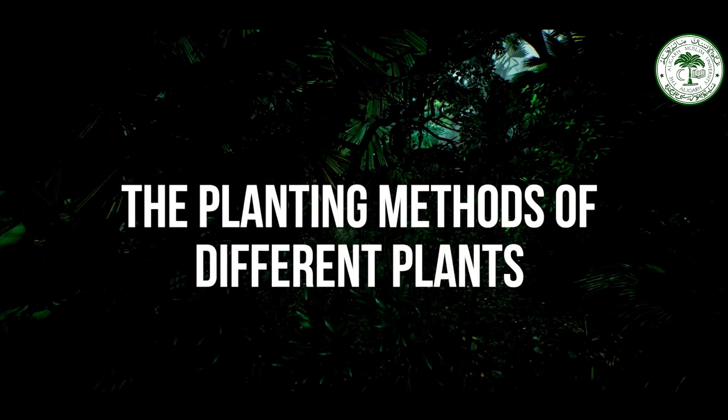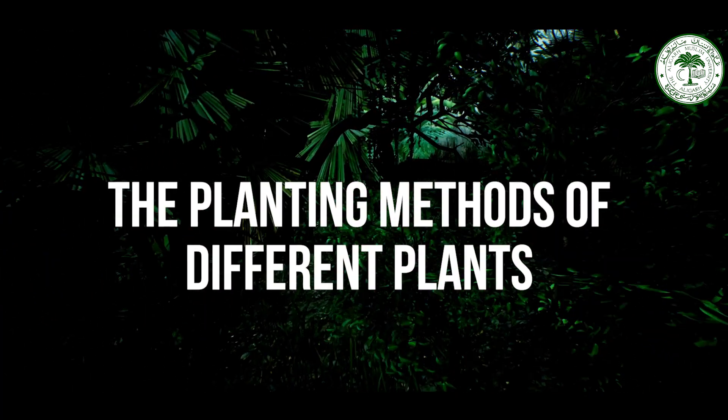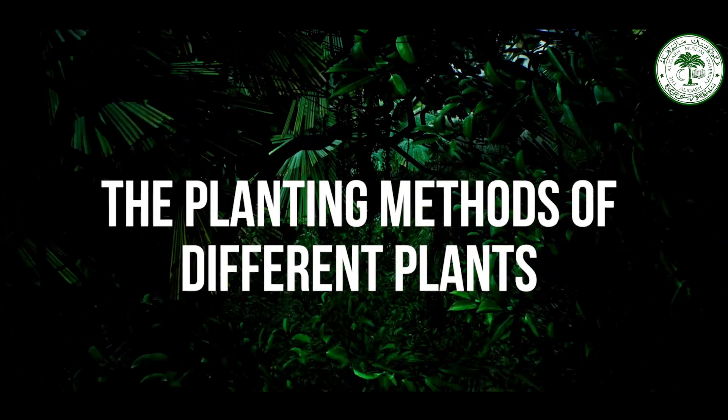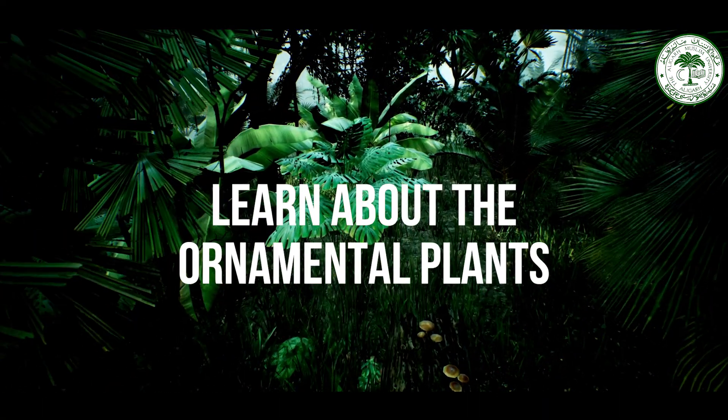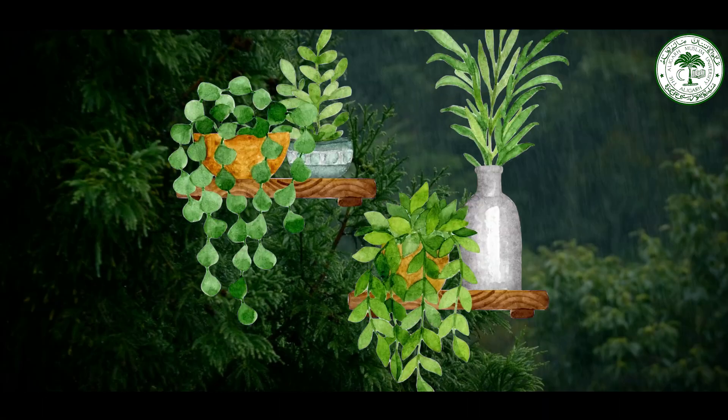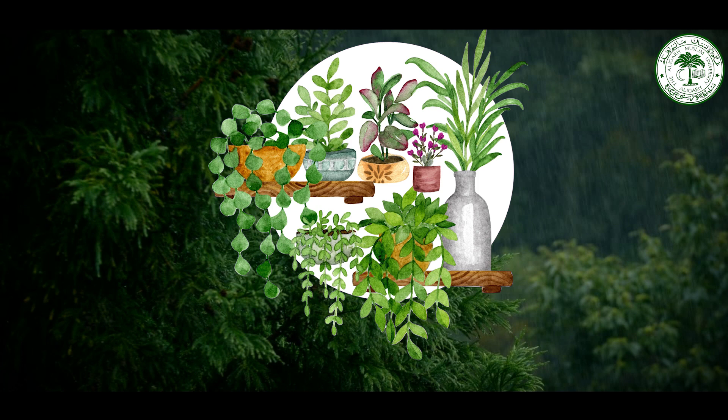In the seventh week, we learn about the planting methods of different plants. During the eighth week, we learn about ornamental plants — how they are used for different types of gardens and different geographical conditions. After completing this course, you will be able to apply the principles of landscaping and make your outdoor surroundings beautiful by applying these principles and elements.